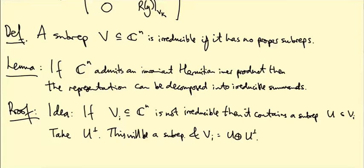So you can always split it up further if it's not irreducible, and eventually this process has to terminate. Because if you go all the way down to one-dimensional subspaces, then they are automatically irreducible—they don't have any proper subspaces at all, never mind representations. So this terminates at some point.